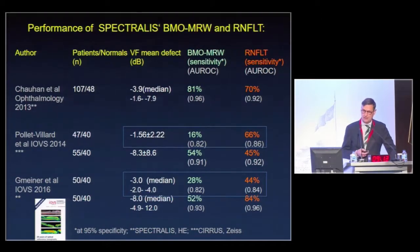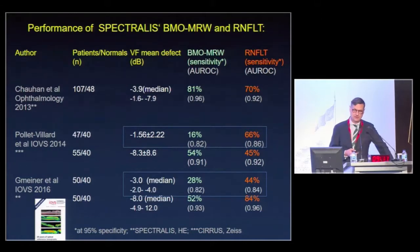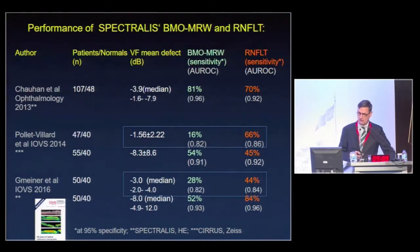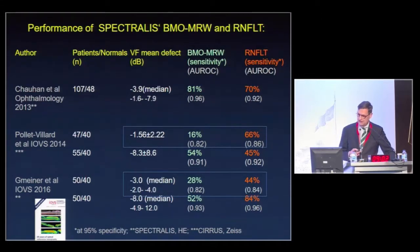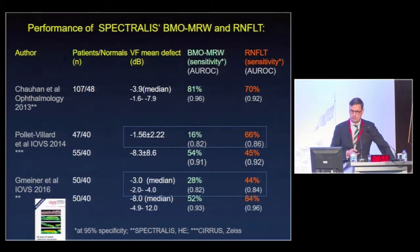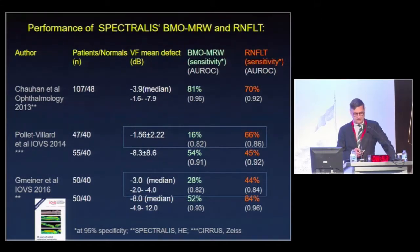From our group, Gmeiner in 2016, we also compared both measurements in early and progressed glaucoma. Again, please look at the blue box — you will see that the sensitivity to diagnose glaucoma is higher for the nerve fiber layer than for the minimum rim width measurement with OCT.